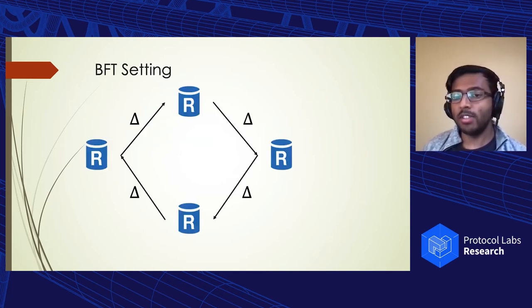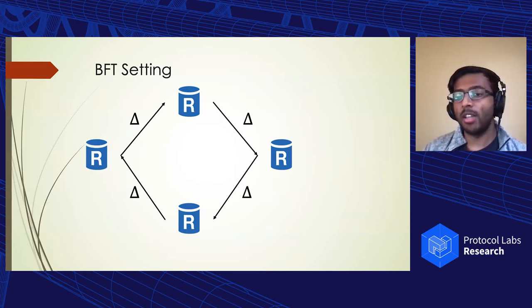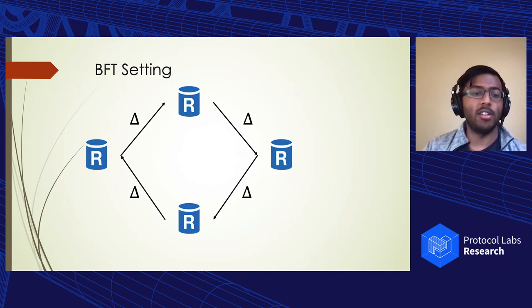The setting I'll be focusing on is the same as a bunch of the popular leader-based BFT protocols, such as PBFT and HOSA. Namely, we assume that there are 3F plus 1 replicas, a partially synchronous network with the worst case network delay parameter called delta, and standard cryptographic assumptions, which are used for digital signatures.